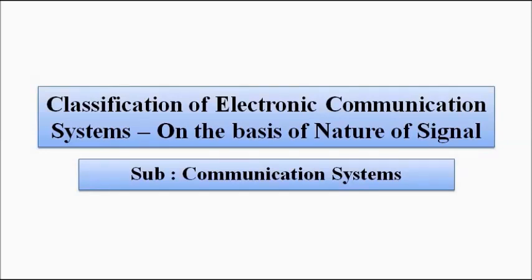Hello friends, we will continue our discussion on communication systems. Previously we were discussing the classification of electronic communication systems on the basis of various parameters. We discussed classification on the basis of direction of communication — simplex, half duplex, and full duplex. In this video we are going to discuss the classification on the basis of the nature of the signal involved.